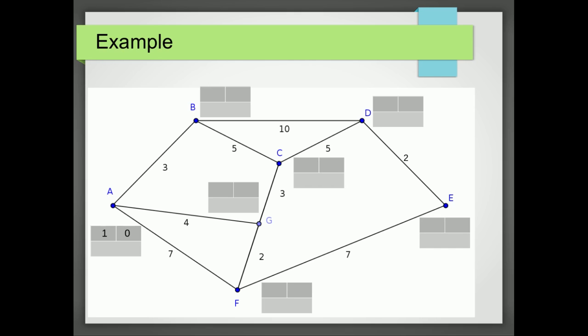So then what we're going to do is we're going to update the working values of all the places that we can get to directly from A. And those are going to be B, G, and F. So the distance to B is 3. The distance to G is 4. And the distance to F is 7. So we now say which one of those has the smallest working value. We can see that B has got a working value of 3. That's the smallest. That's going to become a final value. And this is the second place that we've labeled. So it's got an order of 2.